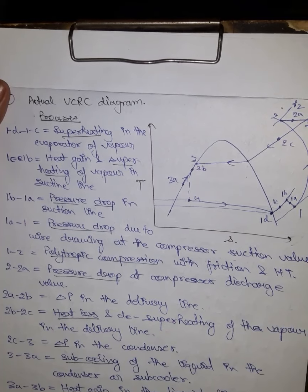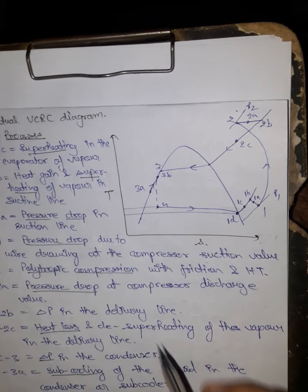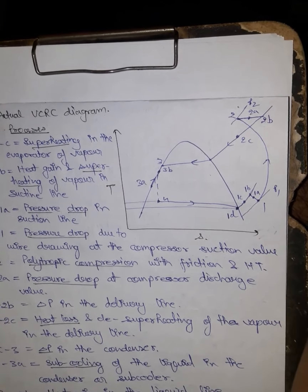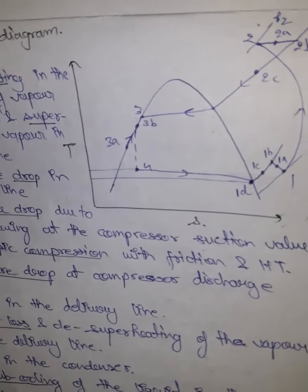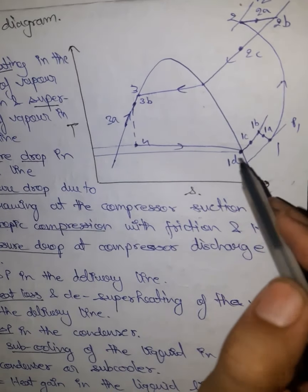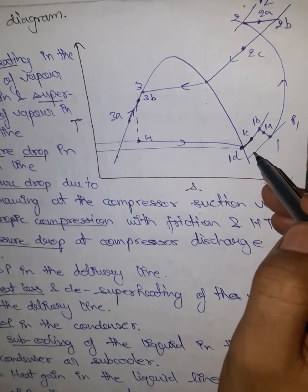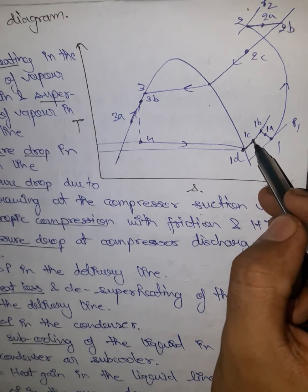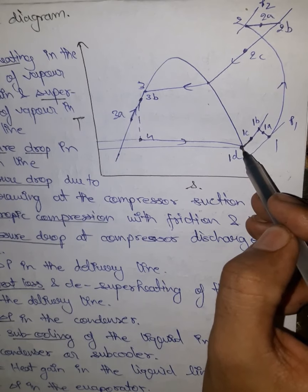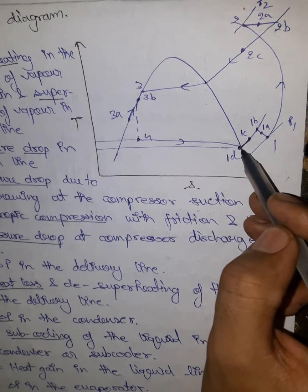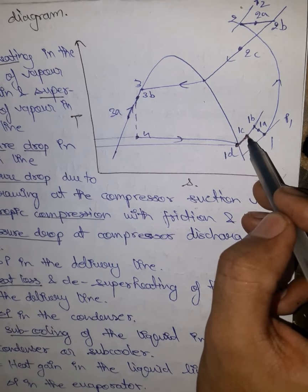I have noted down the various types of losses that are occurring and we will discuss each of them one by one. Correspondingly, I have drawn the TS diagram and will be drawing the PH diagram alongside. We start from point 1d. From point 1d to 1c, superheating is occurring in the evaporator itself — meaning the state we actually reach is not only saturated vapor but includes some superheating within the evaporator.